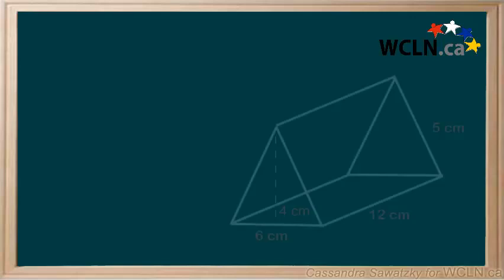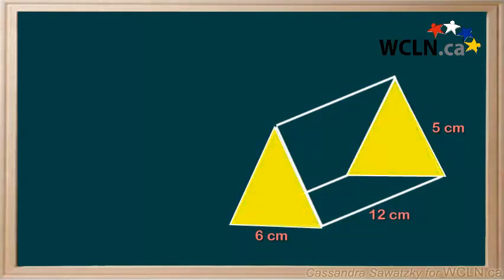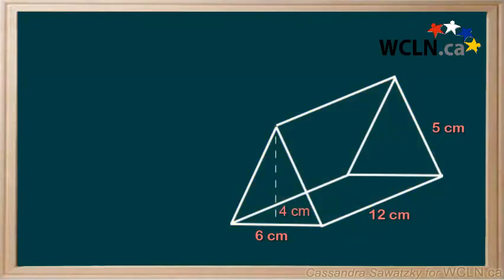Let's determine the surface area of this triangular prism. We know it's a prism since it has the same shape on each end and parallel walls joining them. So to calculate the surface area of this object, we're going to break it down into the two-dimensional shapes that were used to build it. Let's break it down.